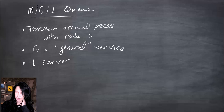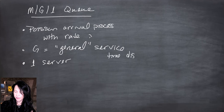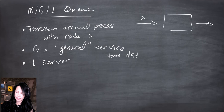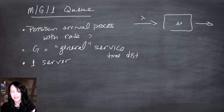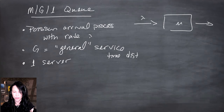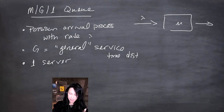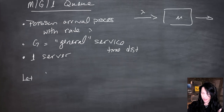The picture looks similar: there's a server, people come in and leave, with someone in service and others lined up. I usually have a mu in these pictures corresponding to the service rate, and it should here as well — it's just that the service is not exponential. I'm going to let S be a service time.